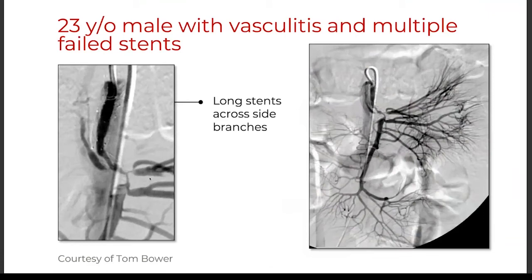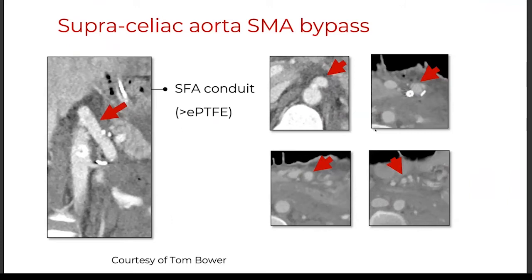What you should not do is place very long stents across branch vessels, as was done on this young patient with moyamoya treated at an outside institution — now a much more delicate and difficult situation. Dr. Bauer was able to navigate that with a bypass, using PTFE or alternatively SFA conduit, which provides a very nice bypass for patients with difficult disease from vasculitis.